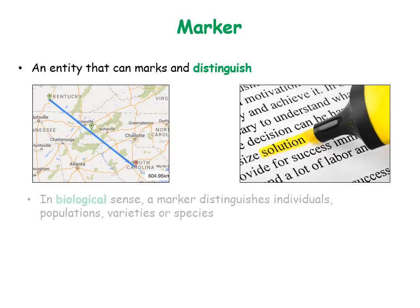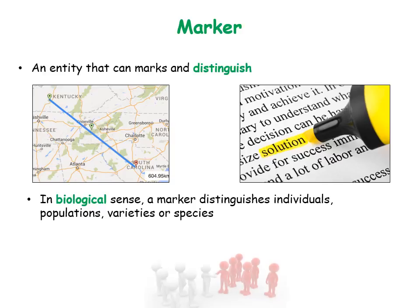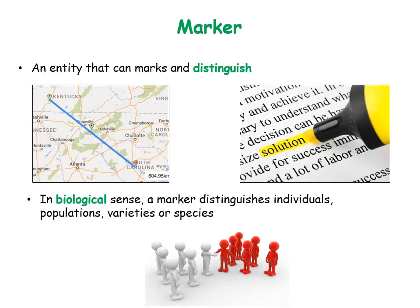In a biological context, a marker distinguishes individuals, populations, varieties, or species. Consider two groups of humans which are distinguished based on the color of individuals. Here, body color is a marker.